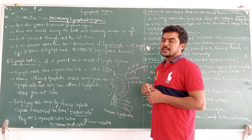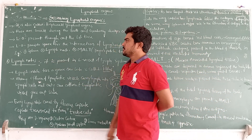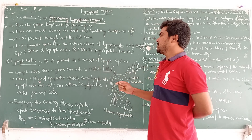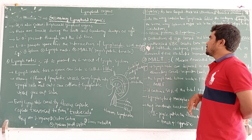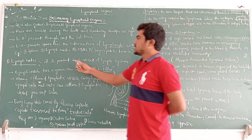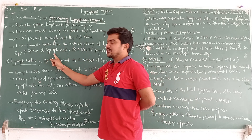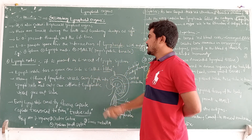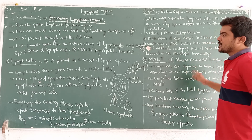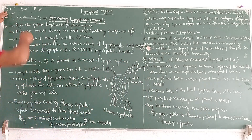There are three types of secondary lymphoid organs. First, the lymph nodes. Second, the spleen. Third, MALT, which means mucosa-associated lymphoid tissue. This is the introduction to the secondary lymphoid organs.